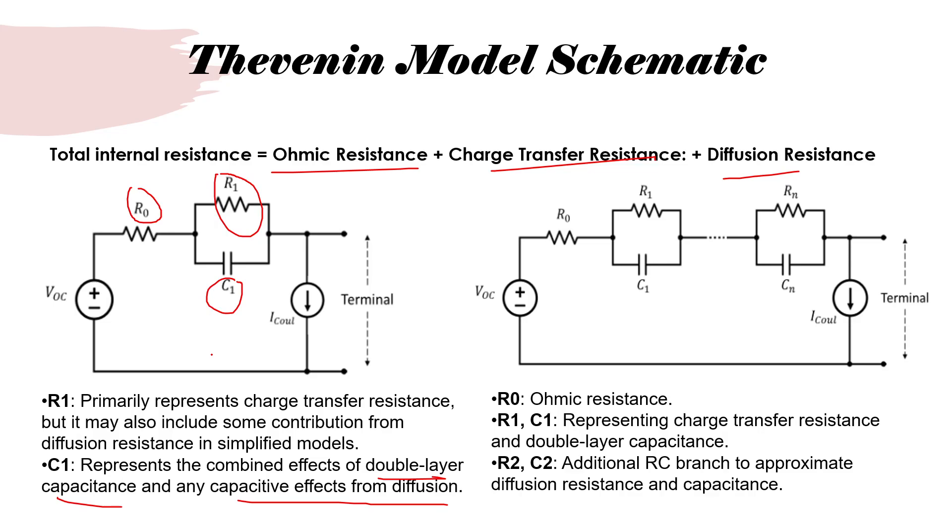As we add more and more RC branches, we get more flexibility in assigning the roles of capturing charge transfer and diffusion. Now instead of one single RC branch capturing the entire slow response, we have individual branches responding to individual effects. The first RC branch would correspond to charge transfer resistance. R1 and C1 represents charge transfer resistance and double layer capacitance, whereas the second RC branch in a two RC circuit represents diffusional resistance and capacitance. This is how you can more accurately capture the effects and capture voltage response more closely.